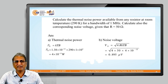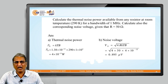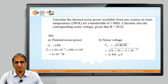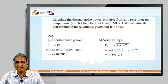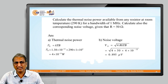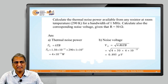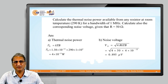For the second parameter, noise voltage: V_n = √(4RkTb). 4 is constant and R is given as 50 ohms. Substituting all parameter values, we get V_n = 0.895 microvolts. Noise voltage is measured in volts. In this way, we calculate thermal noise power and noise voltage.